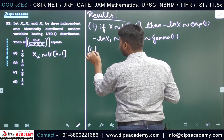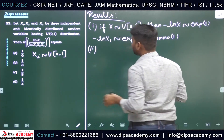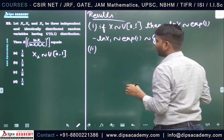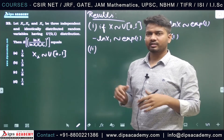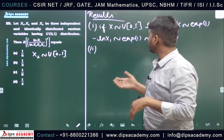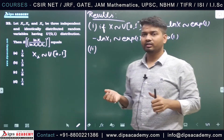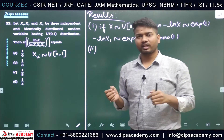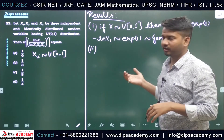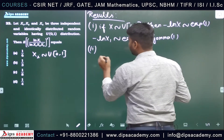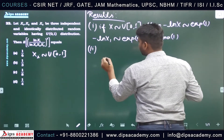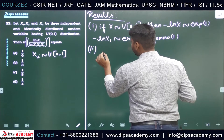Using the additive property of the exponential distribution: if X1, X2, ..., Xn each follow Exponential(1), that is Gamma(1,1), then their sum follows Gamma(1,n) with parameter n.